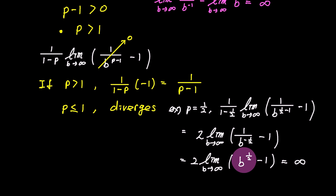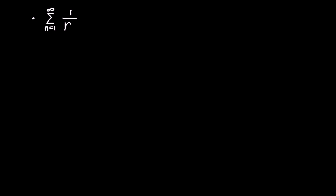Let's solve a few simple examples together. Consider the infinite series 1 over n to the power of 0.9. Since p is 0.9, which is less than or equal to 1, according to the p-series test, this infinite series diverges.